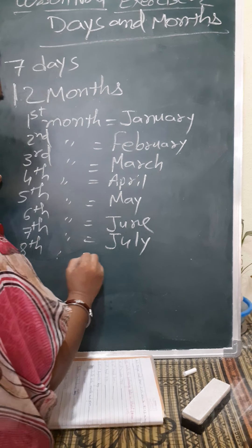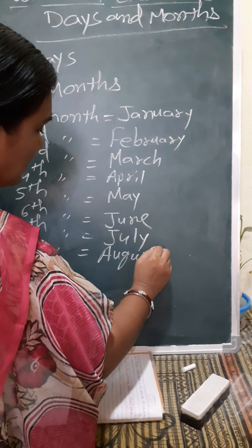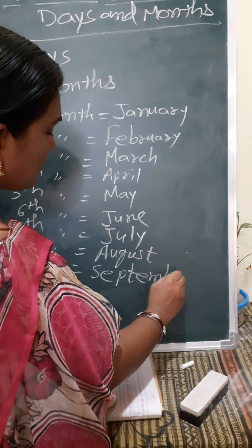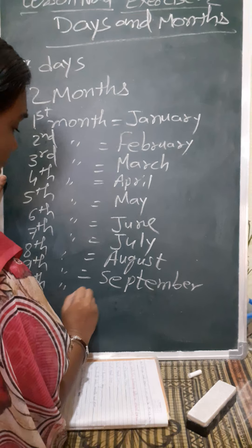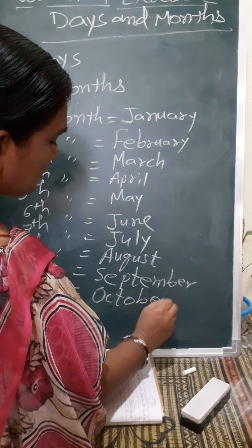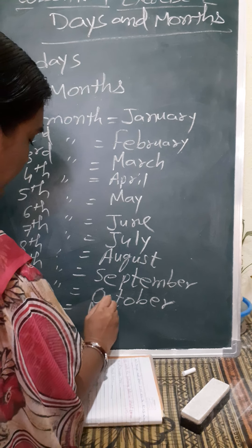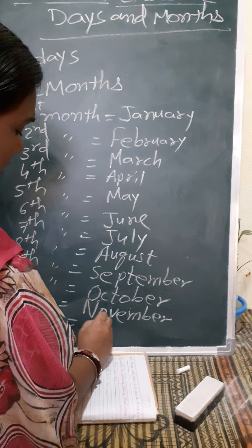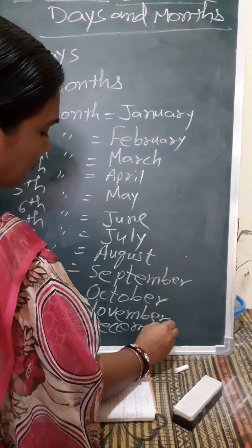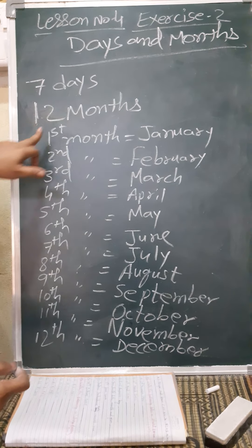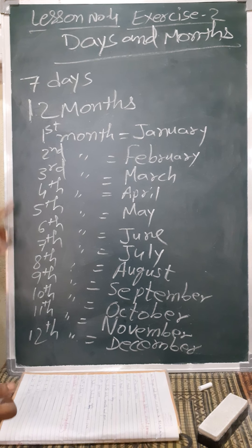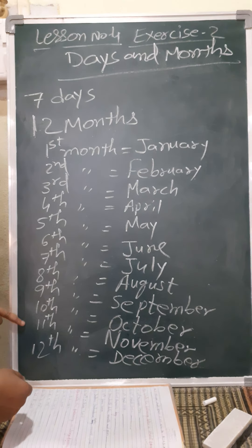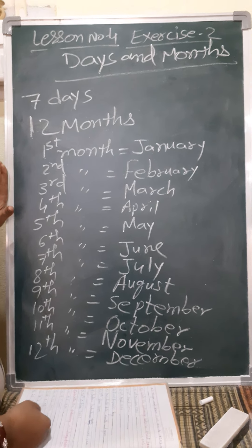8th month is August, 9th month, 10th month is October, 11th month is November, 12th month is December. You have already learned all the 12 months' names from first standard. Now we will learn how to write dates in short form, and from short form how to write in long form.